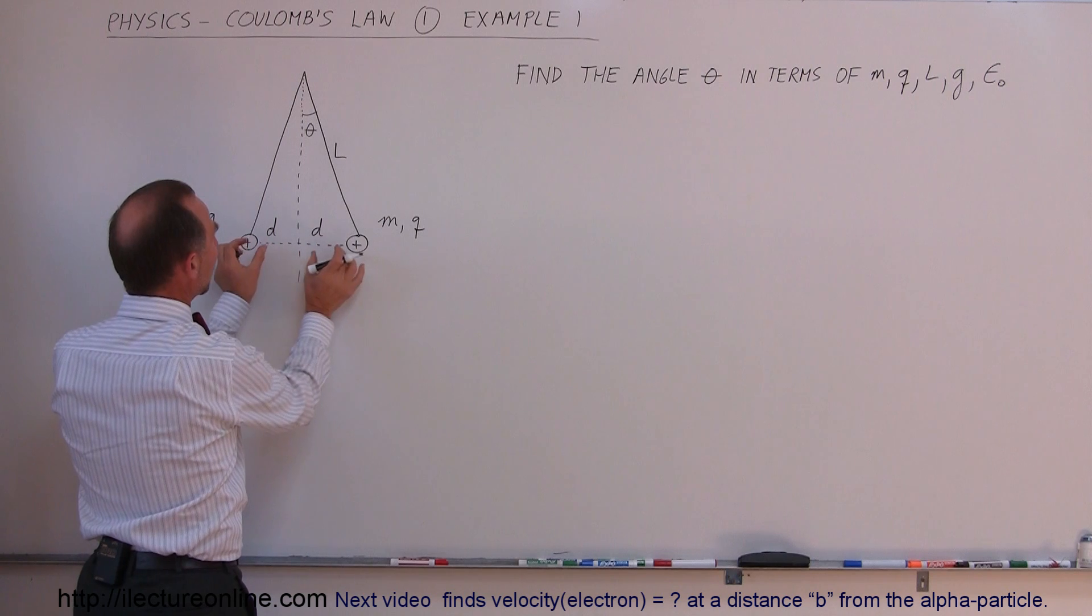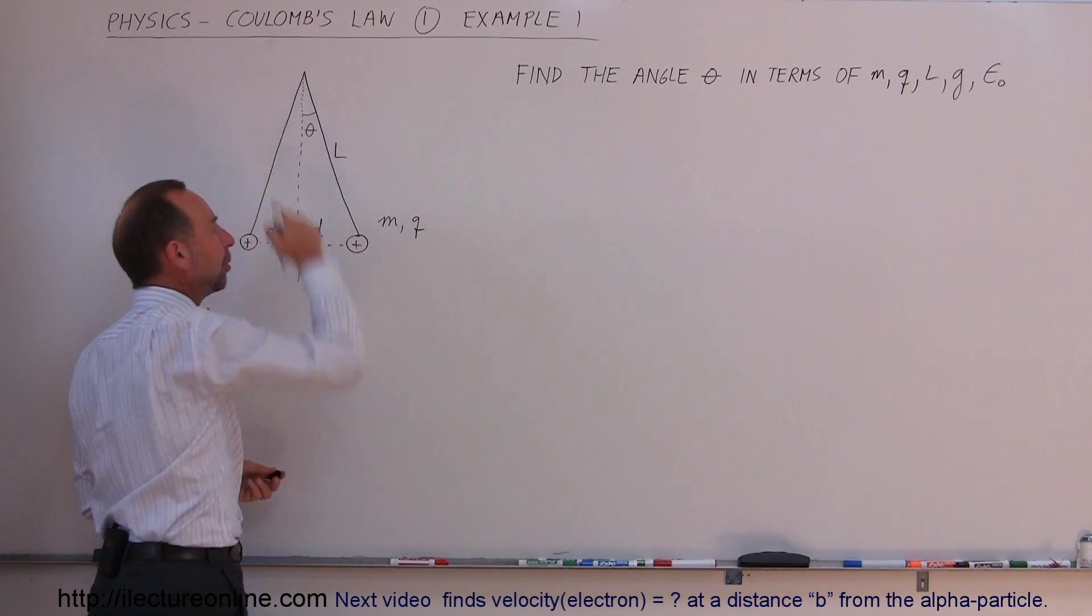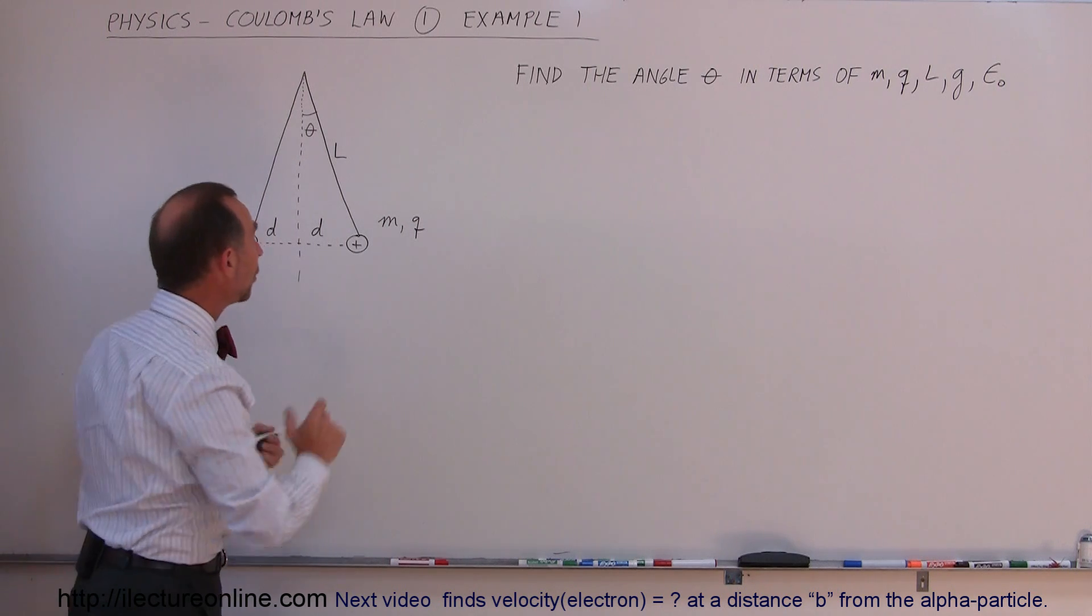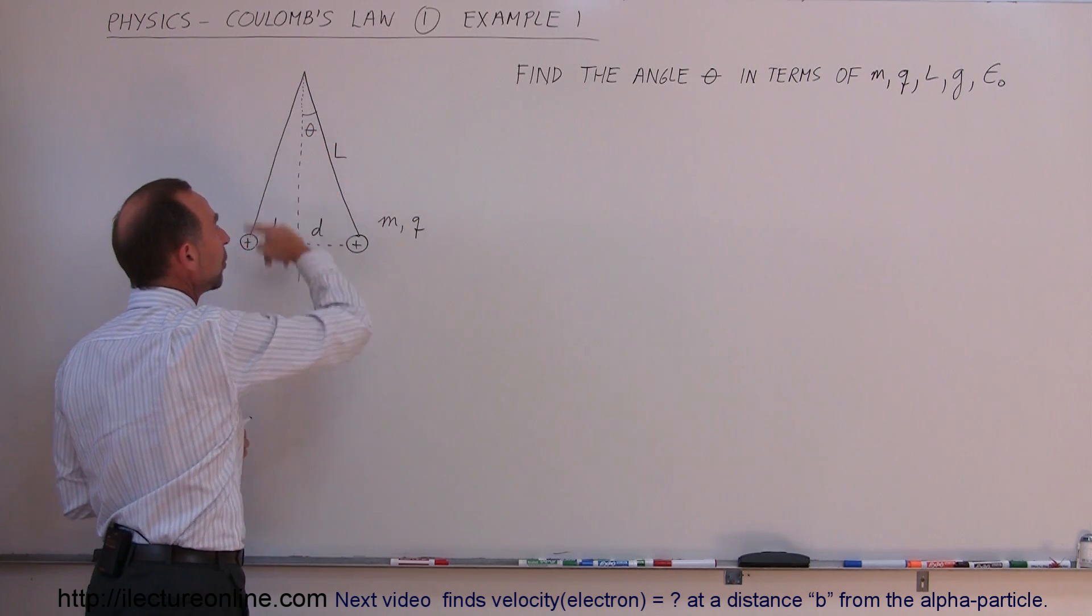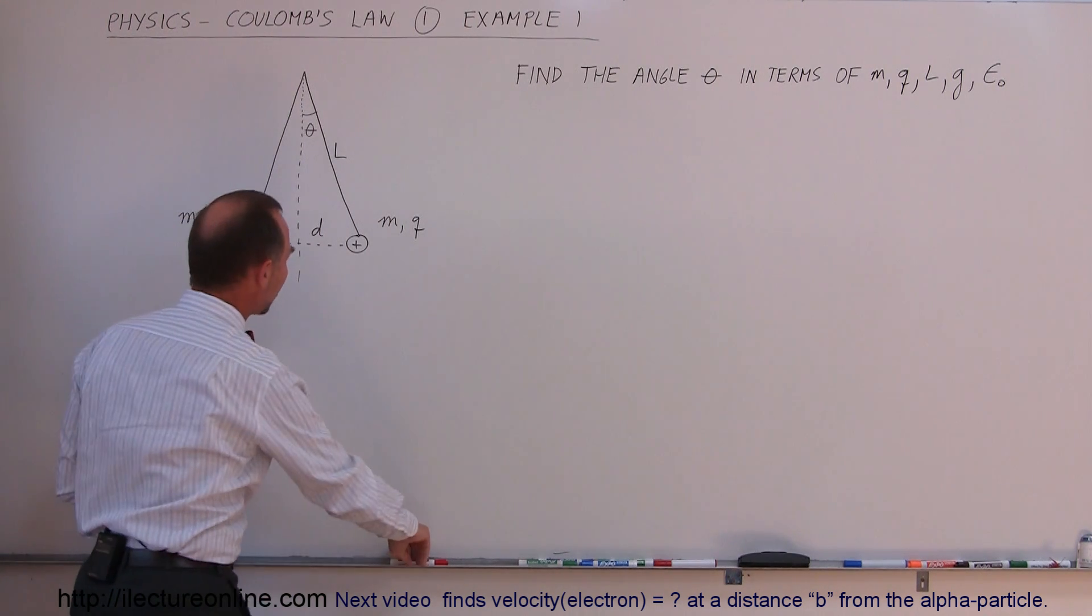You can see that they'll be repelled this way, and gravity will also pull them downward, and then the tension of the strings will pull them upward. The question is, what will be the angle right here, theta, with respect to all the other variables that we have?